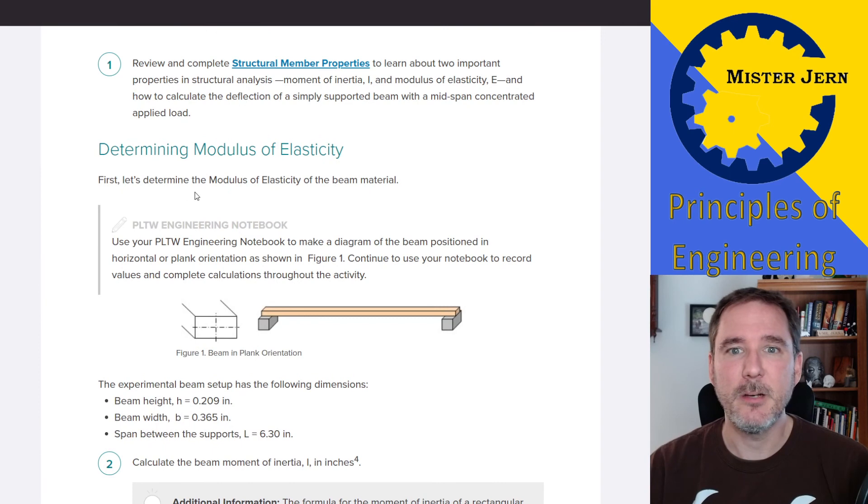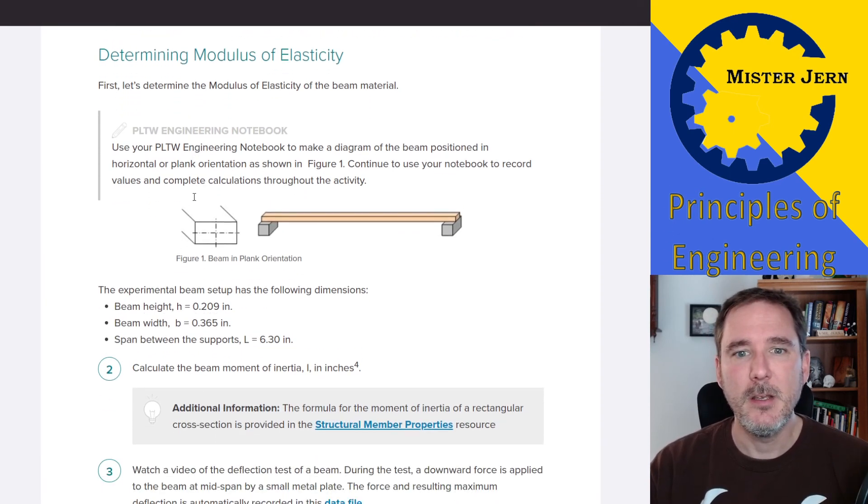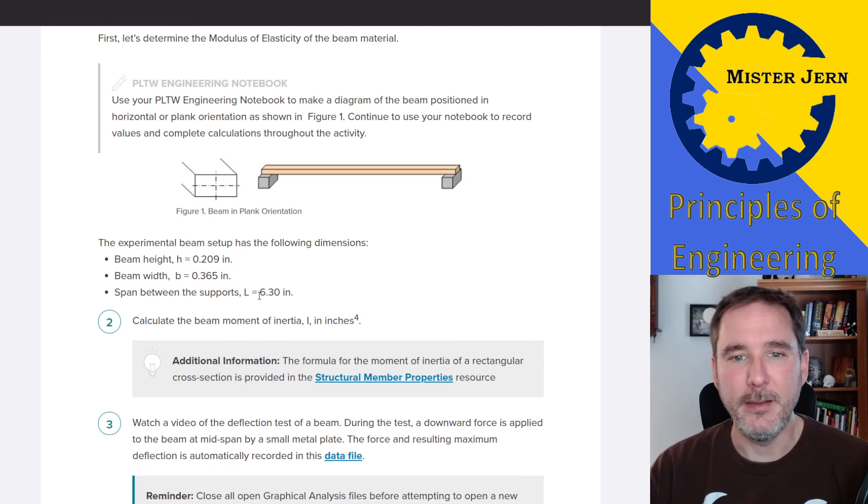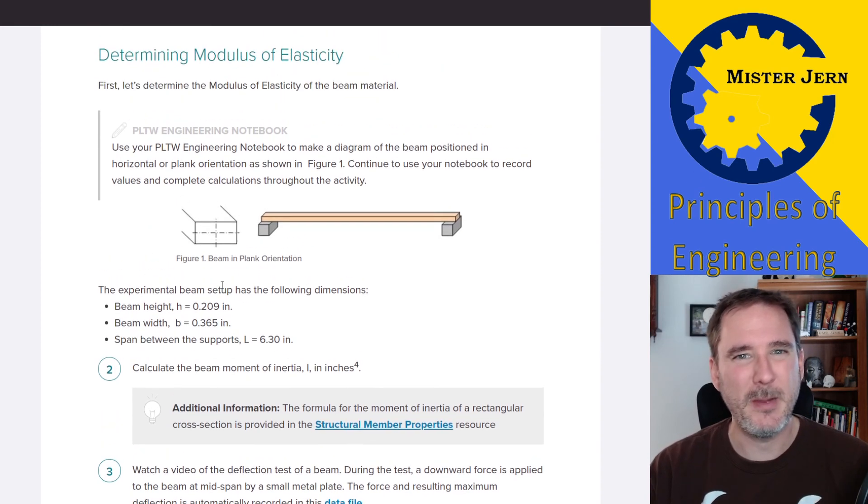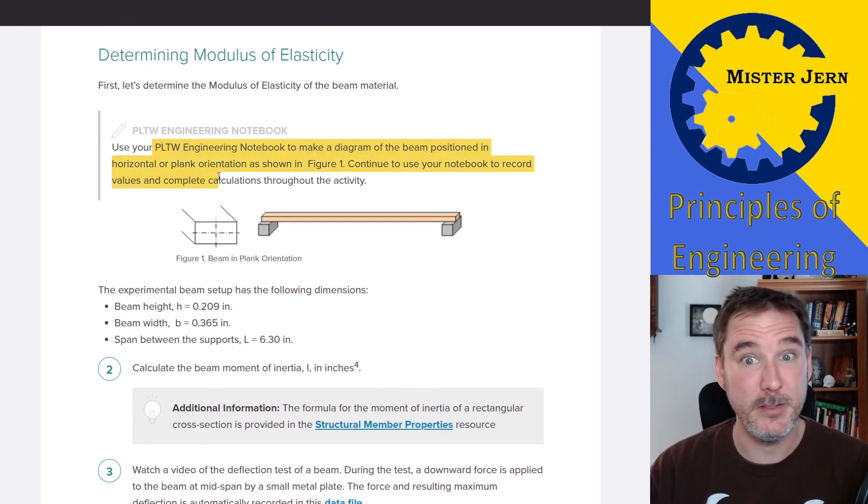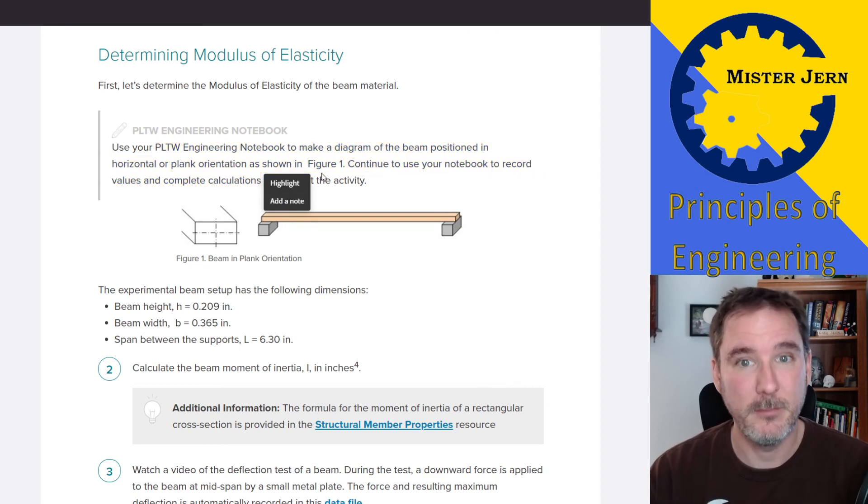Step one: determining the modulus of elasticity. Here is a beam. It talks about how to do this. It's set flat on some bricks, and it tells you the beam height, the beam width, and the length that it's supported between supports. It's all in inches. So you have the height, the base, the width, and the length. Step two: summarize that, draw it, sketch it, all that stuff.